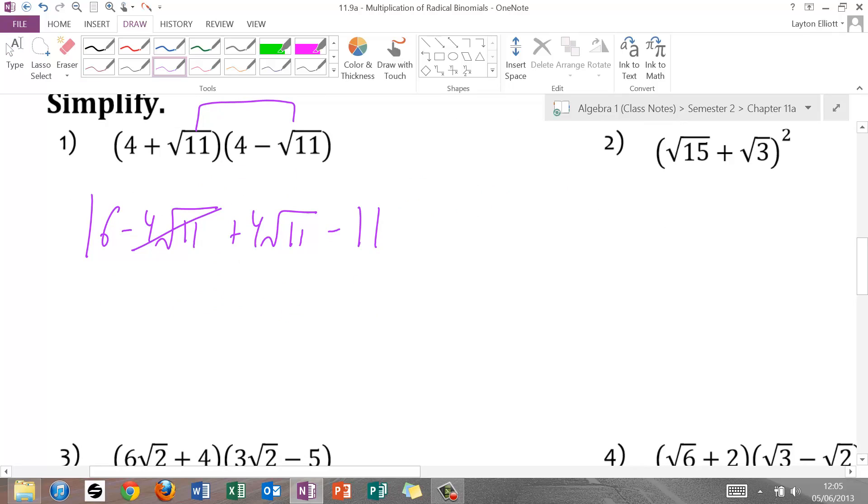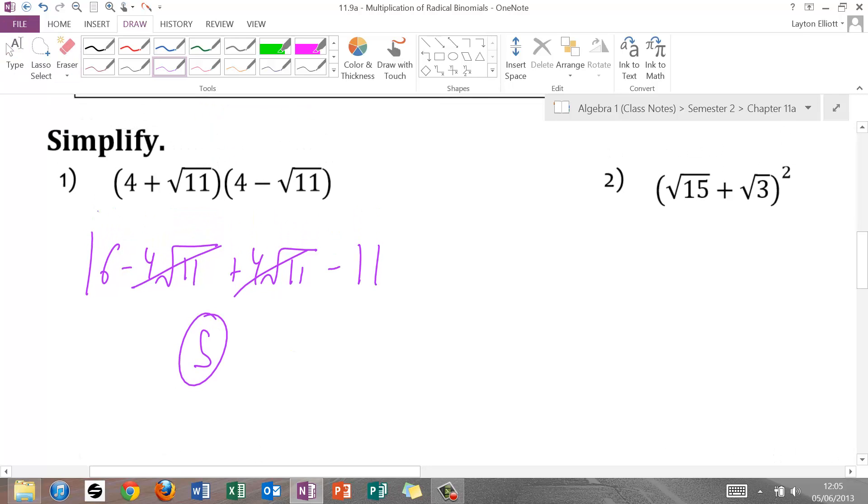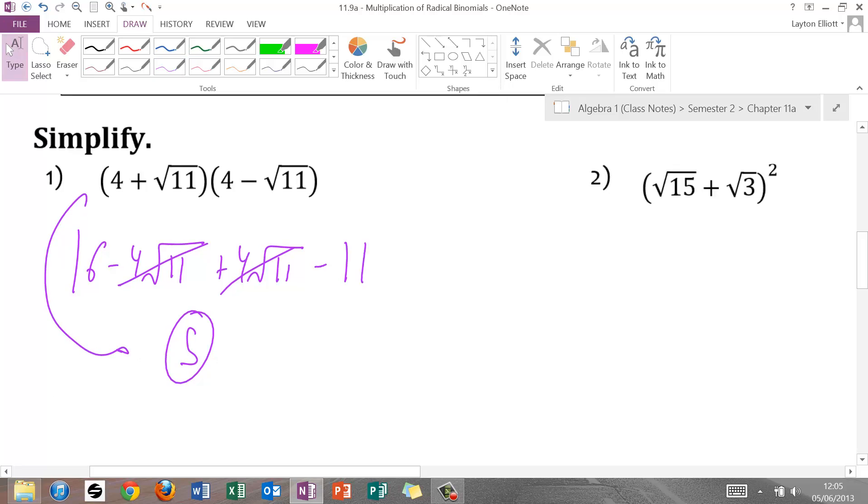Combined like terms, your middle terms cancel. We have 16 minus 11, which is 5. So this is a little weird. We multiplied two radical binomials together, and we got a rational number, 5.